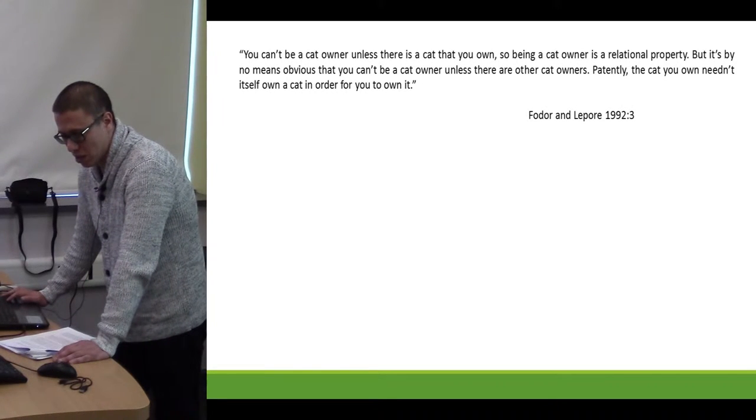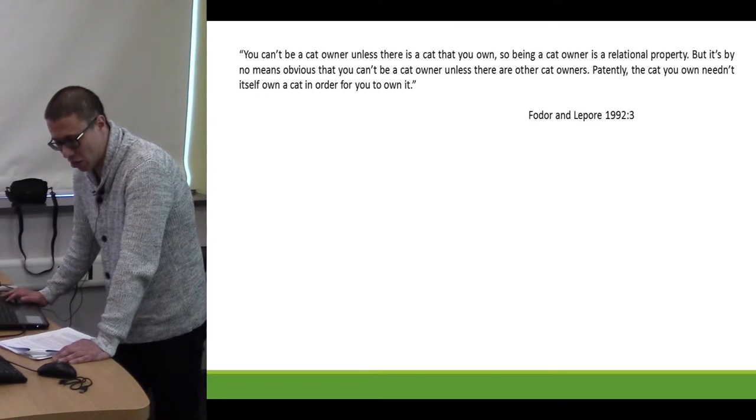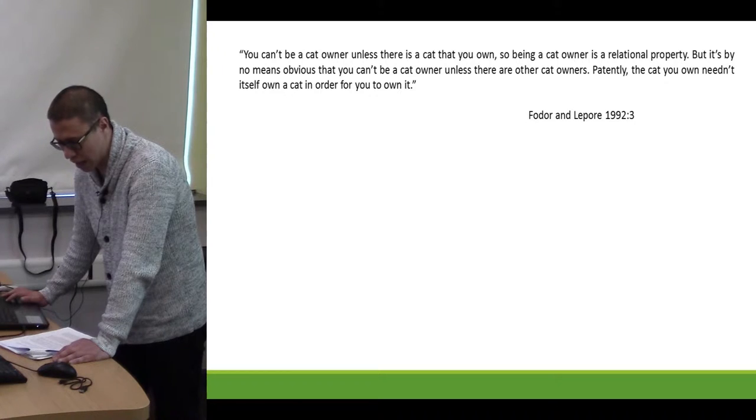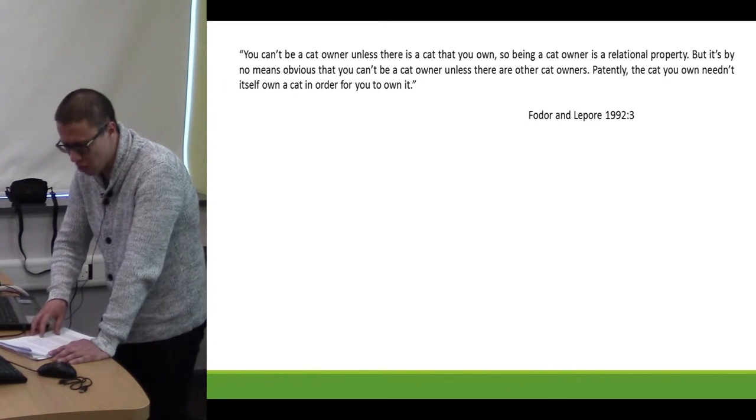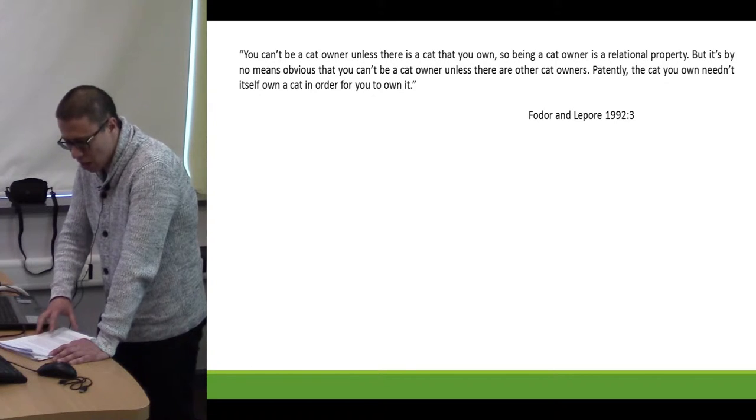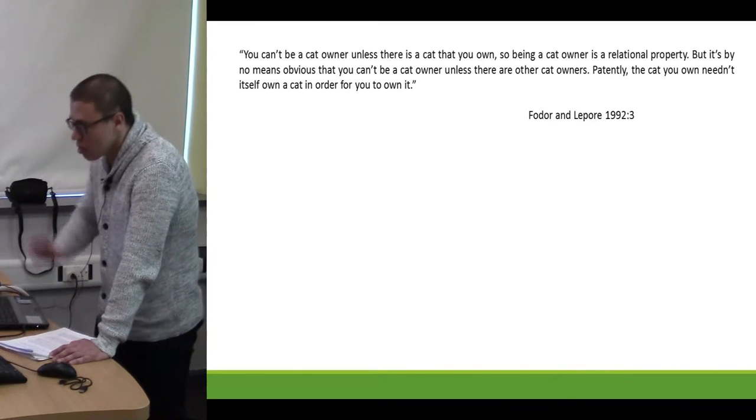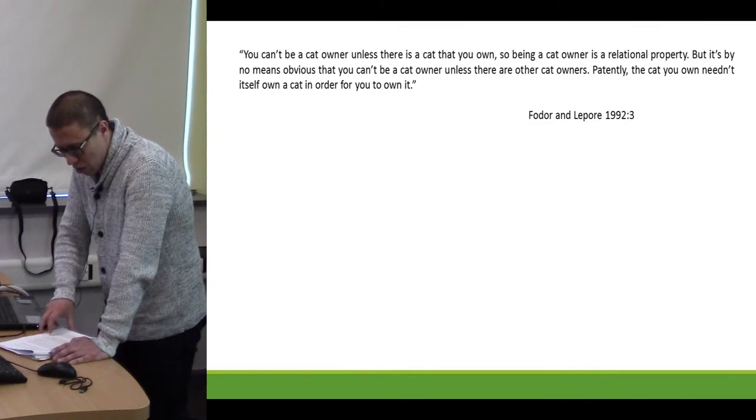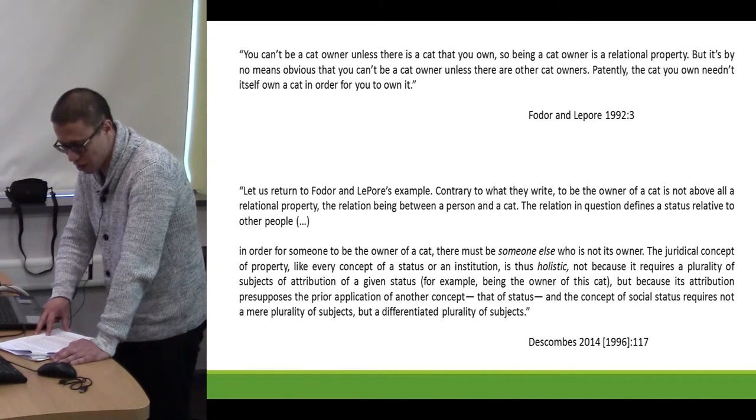Remember earlier that I said I was a cat owner. How does one understand what a cat owner is? A cat owner is a relational property, but it's by no means obvious that you can't be a cat owner unless there are other cat owners. Patently, the cat you own need not itself own a cat in order for you to own it. Fodor and Lepore are emphasizing here that other people need not have cats of their own in order for someone to be a cat owner. In other words, I can still be a cat owner even if nobody else on this planet knows what it means to be a cat owner. This is a pretty good argument, but Vincent Descombes made an excellent rebuttal.